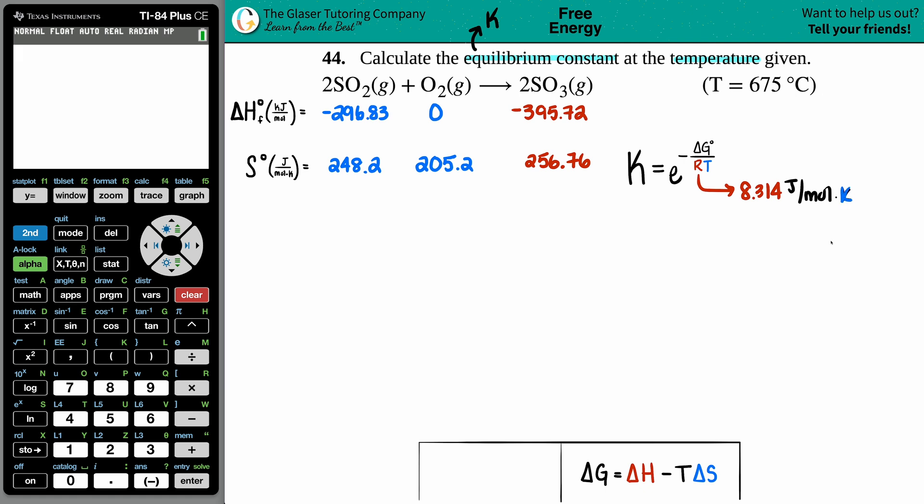These units will dictate what units are allowed. The R value says the temperature has to be in kelvin, but they gave it to us in celsius. I can convert the temperature from 675 degrees celsius to kelvin by adding 273.15. That gives us 948.15 kelvin.